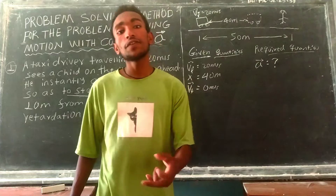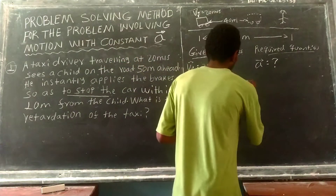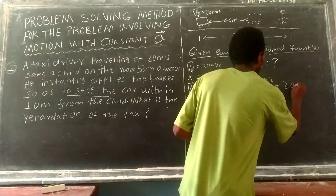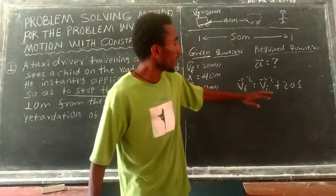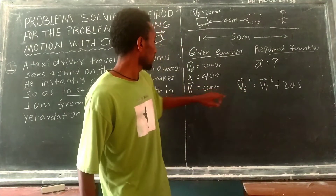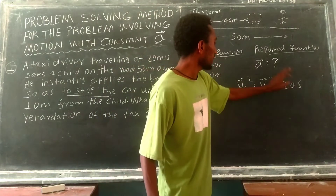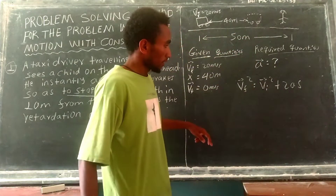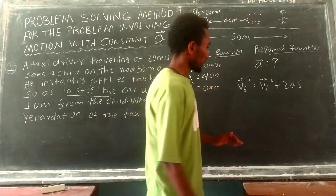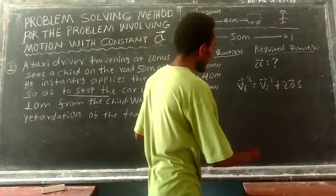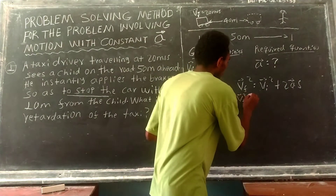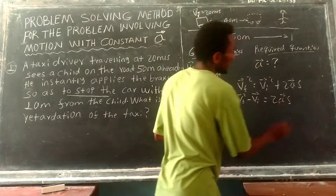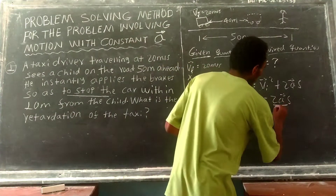We can use the time-free equation: final velocity squared equals initial velocity squared plus 2 times acceleration times displacement. Rearranging for acceleration: a = (v_final² − v_initial²) / (2s).